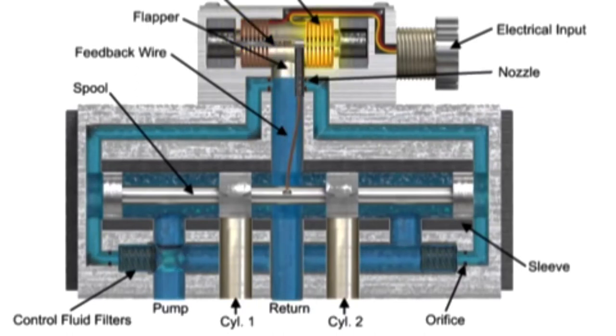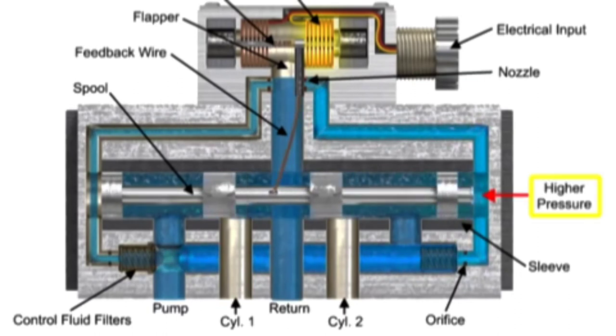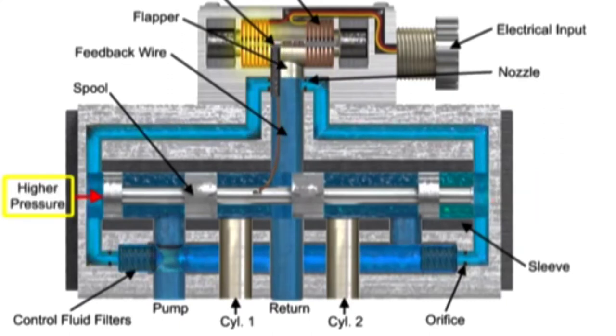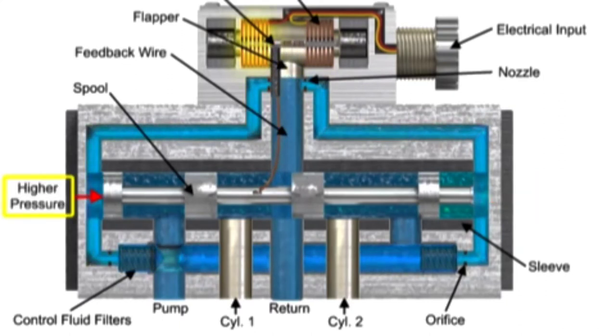This allows pressure to increase at one end of the spool and decrease at the other. The spool then starts to move away from the higher pressure. If the armature turns clockwise, pressure builds on the left end of the spool and it moves to the right.